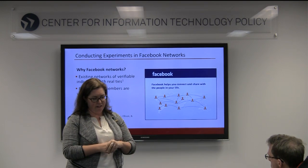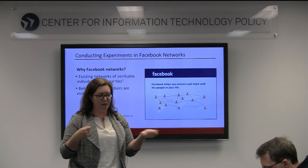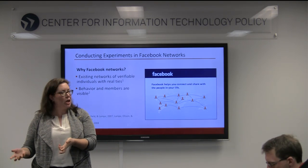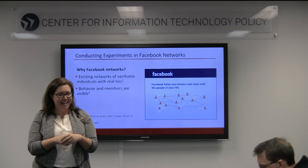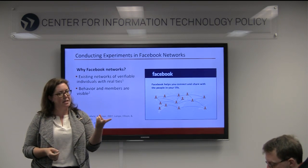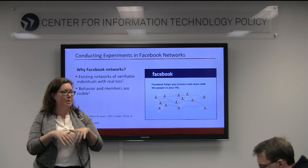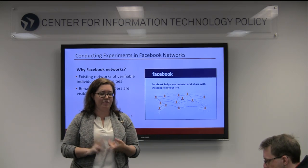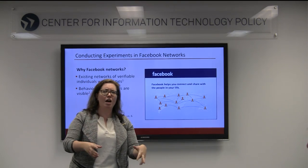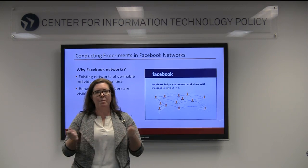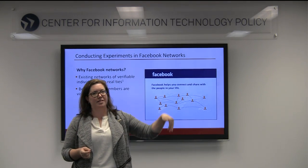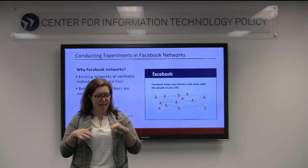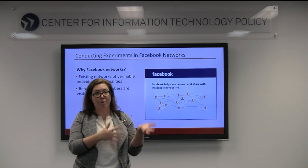I want to do these experiments in existing Facebook networks because these are verifiable relationships. Your Facebook friends are real people — people on your soccer team or in your book club. This is different from Twitter, where you can sign up with an anonymous account. Facebook limits accounts to one per person and requires a real email, so there's a higher degree of verifiability. Also, Facebook makes our behaviors really visible — we post status updates showing what we're doing. The members of networks themselves are visible too: you can go to a friend's Facebook page and see who your friends have in common. That visibility and traversability of the network is important for the studies we're going to run.